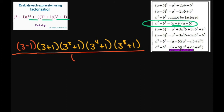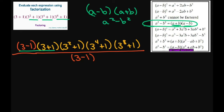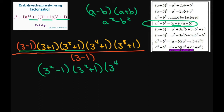Now I can do that as long as I do it in both the numerator and denominator. This has the form of a minus b times a plus b, which gives you a squared minus b squared. So this is going to give you 3 squared minus 1, which is what we want. So this becomes 3 squared plus 1 times 3 to the power of 4 plus 1 times 3 to the 8th power plus 1, and our denominator is just 2.